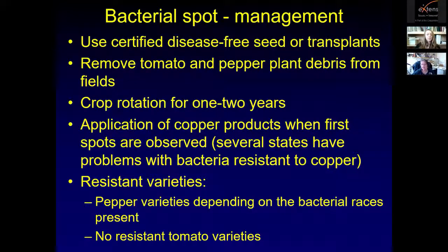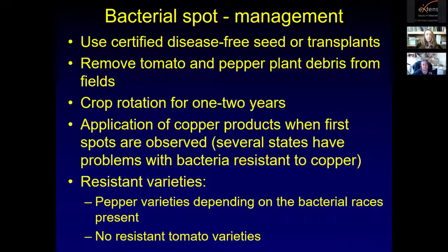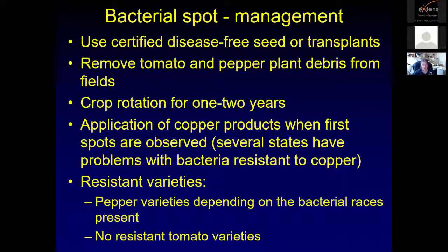If you have tomato or pepper plant debris from previous years and you might have seen some bacterial spot, it would be good to remove it from the field or plow it under. Rotate to crops that are not susceptible — anything not in the solanaceous family for one to two years would be beneficial. You can apply copper products when you see the first leaf spots. In several states, bacteria have already become resistant to copper, so depending on your strain, you may or may not have success. There are resistant pepper varieties, but some races have been able to overcome resistant varieties. There are no resistant tomato varieties for bacterial spot.